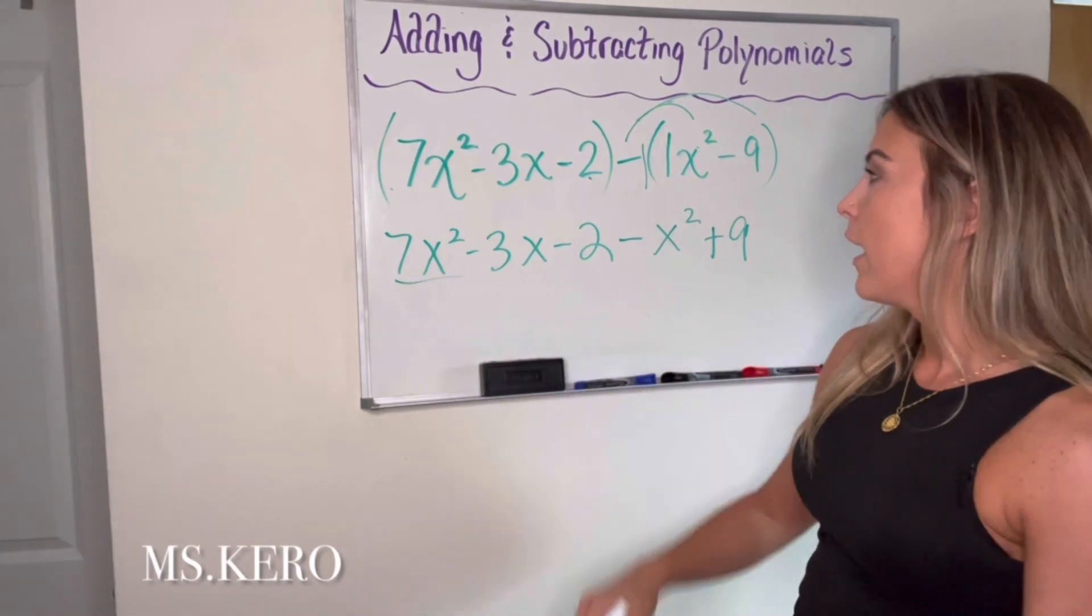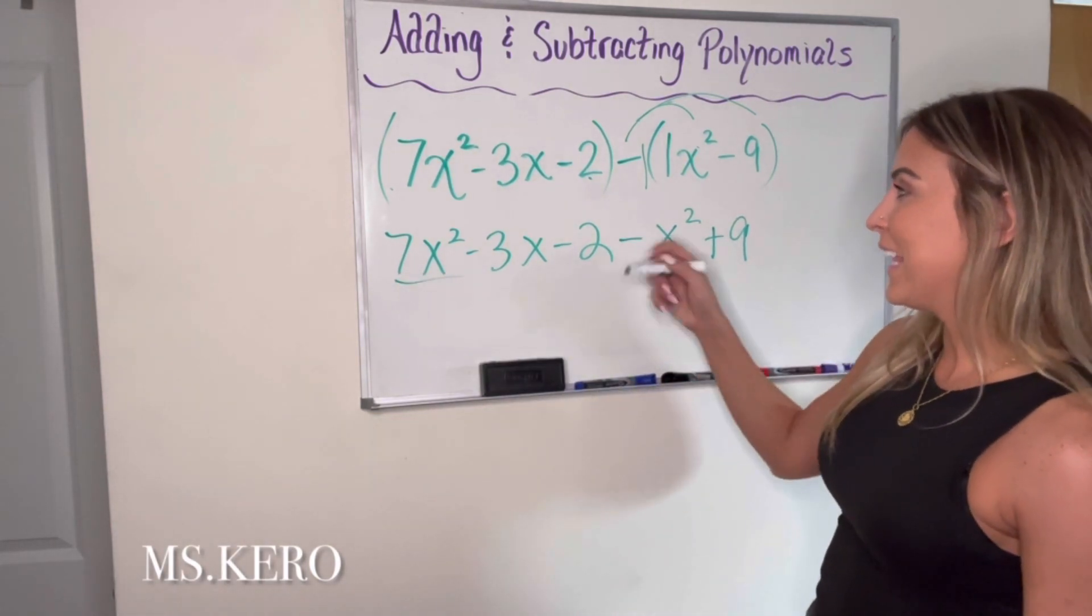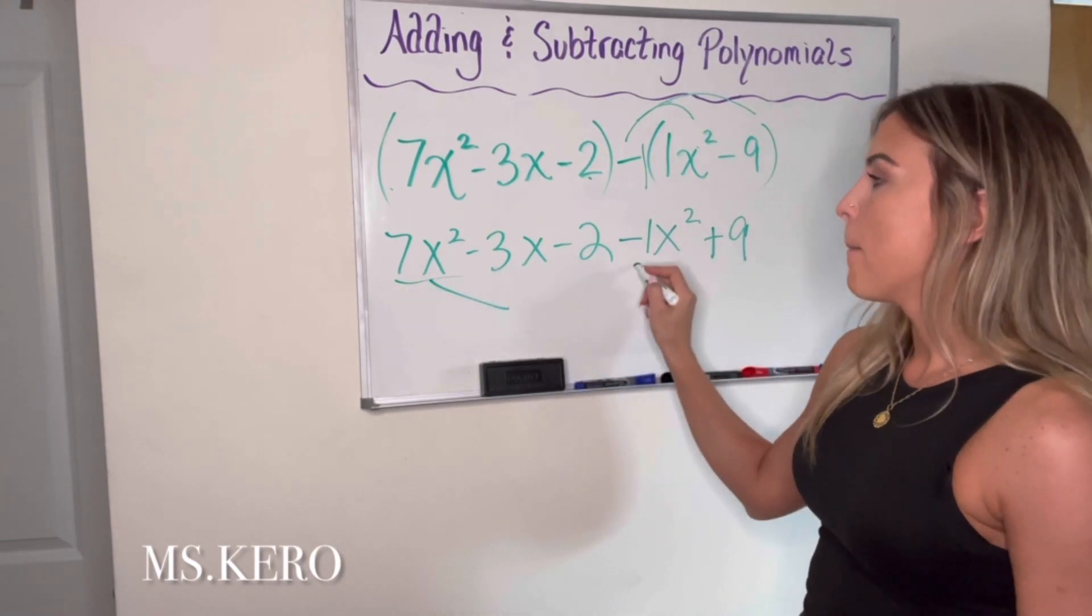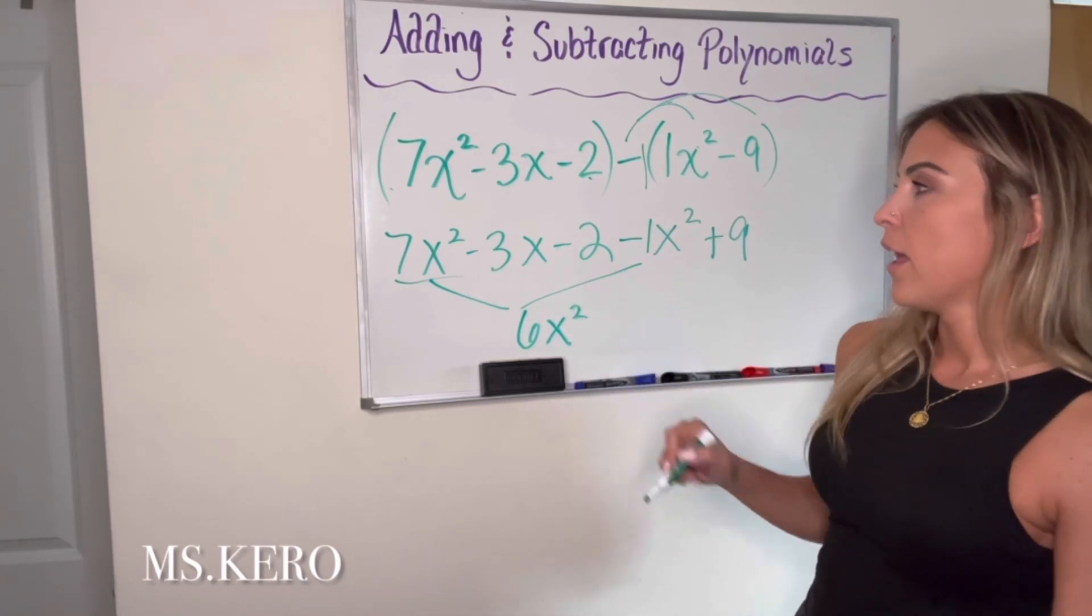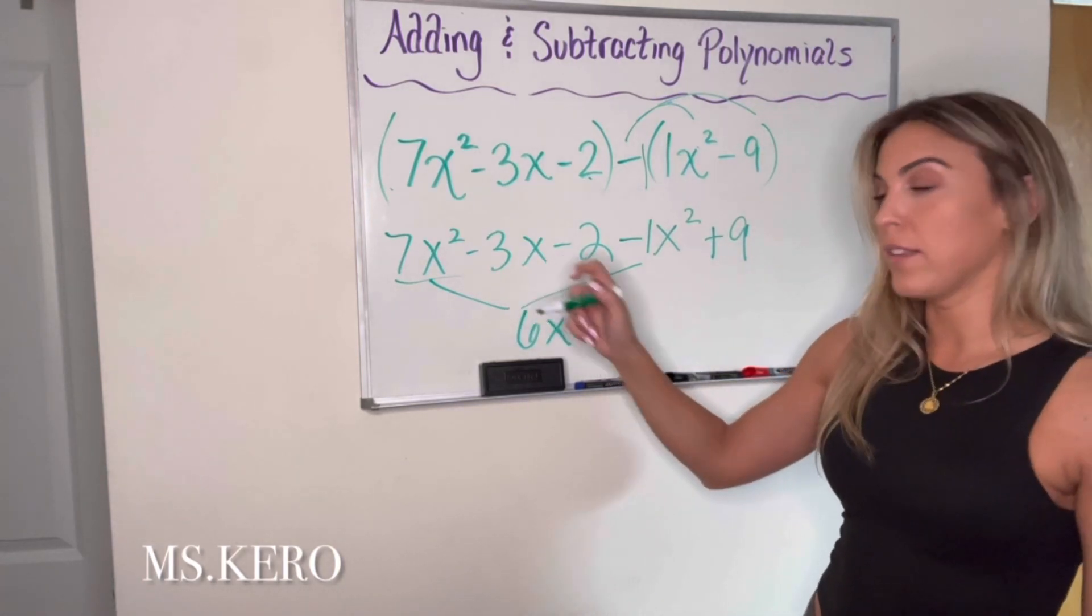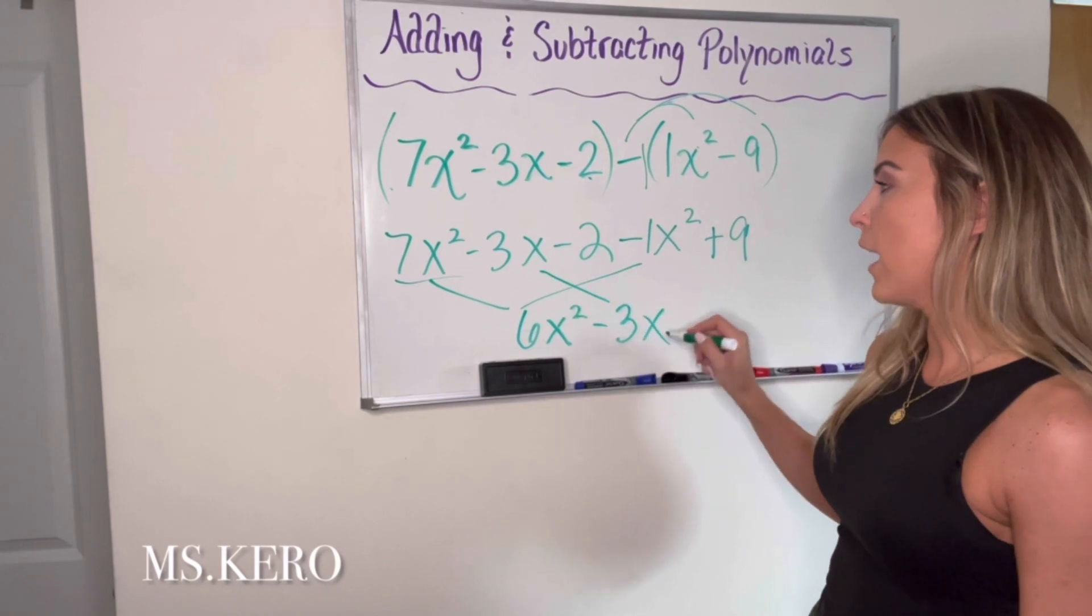So 7x squared can be combined with negative 1x squared. So 7x squared minus 1x squared is 6x squared. That negative 3x, again, doesn't have any like terms. So I'm going to go ahead and just bring it down, minus 3x.